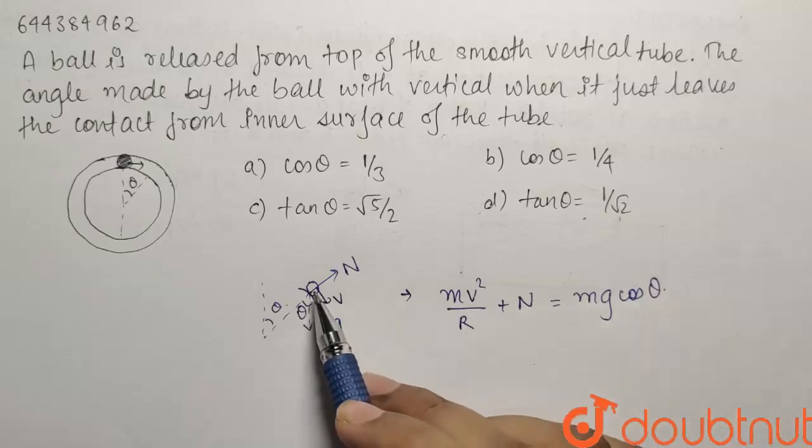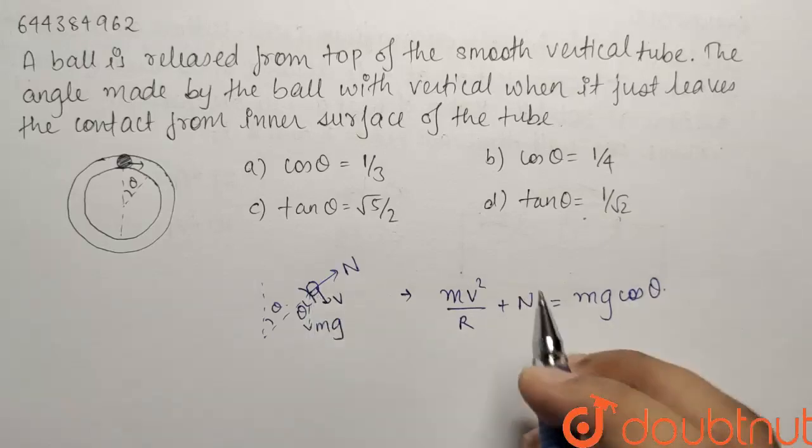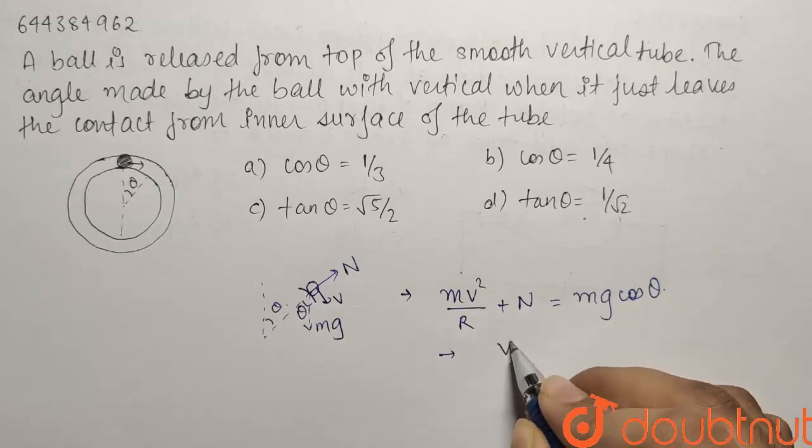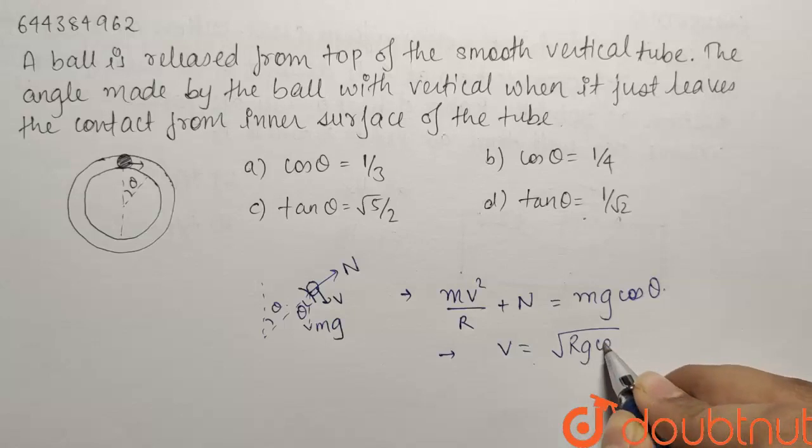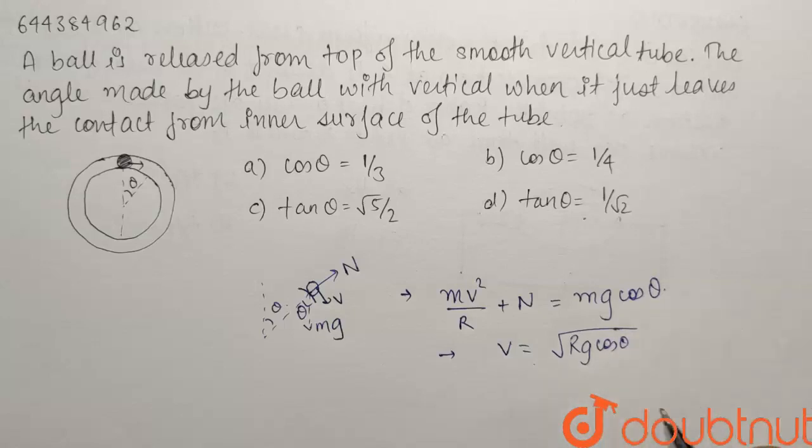And now, if you want it to leave the inner surface, normal has to be 0. So from here your velocity comes out as under root rg cos theta. So now you have found out the velocity.